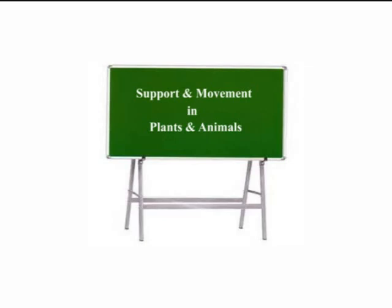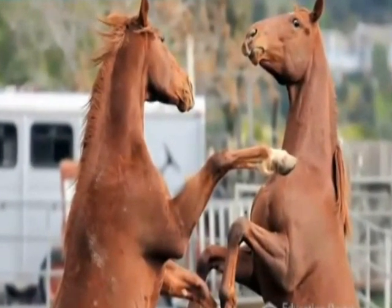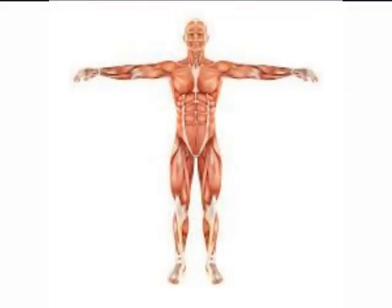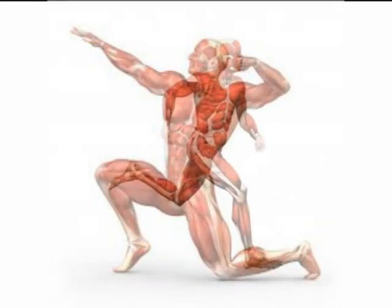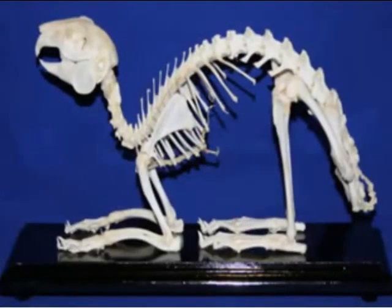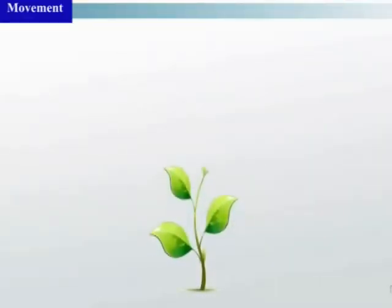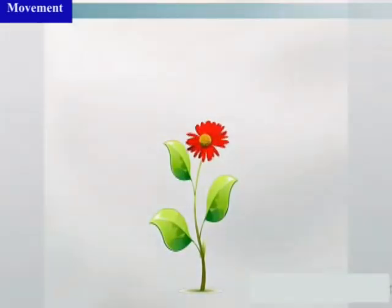Welcome to the last chapter, which is support and movement in plants and animals. Support is the ability of organisms to bear their weight and maintain their body forms. It includes holding their body parts in their correct positions and allowing for movement. To achieve this, organisms require a support framework. Movement is the displacement of parts of the body of an organism, for example growth movement of plants and limbs of animals.